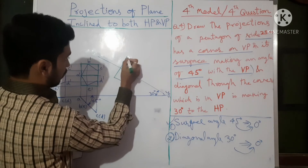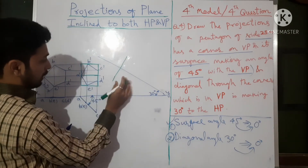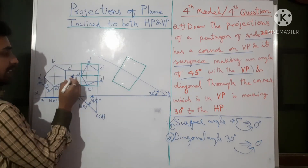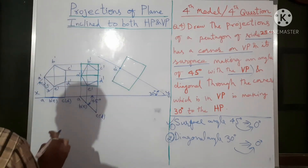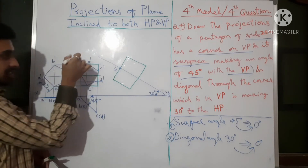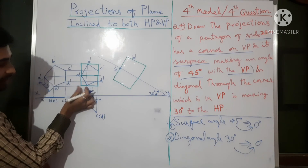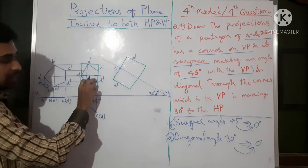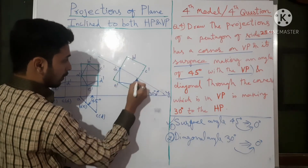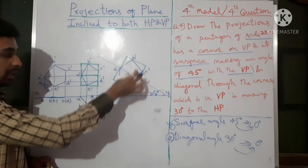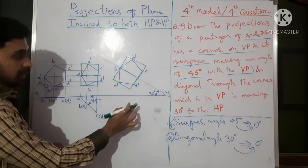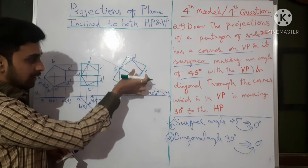Shifting and transferring is a time-consuming process because dimension measurement is needed. As I am not drawing with exact dimensions, take accordingly. The box is transferred: A-dash comes here, then measure the distance to place B-dash, then E, then D-dash, then C-dash — join all. The diagonal through A is now making 30 degrees with HP. Verify this: if you draw the box the other way, the diagonal would make 60 degrees.